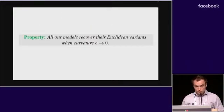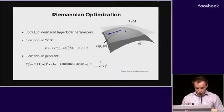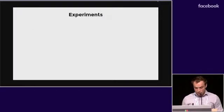An important property of all our models is that they recover their Euclidean variants when the space is continuously deformed to a space of constant curvature zero, which corresponds to the Euclidean space. Finally, we use Riemannian optimization since we have closed form expression for exponential map and Riemannian gradients.